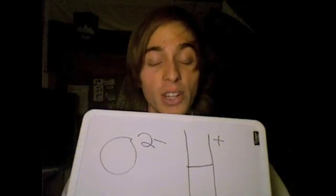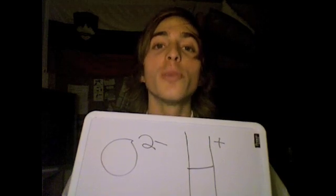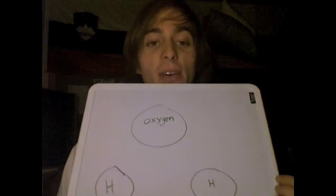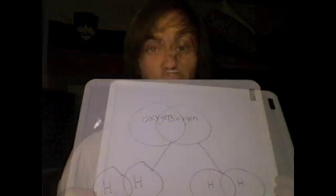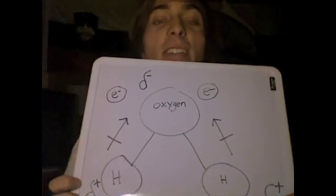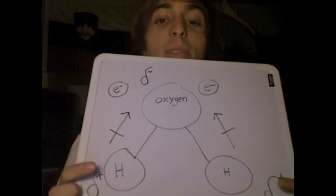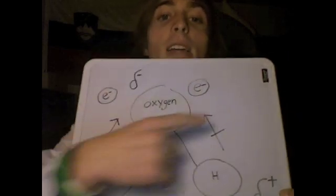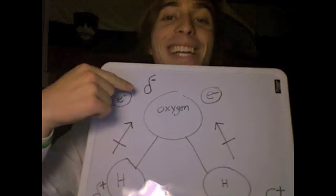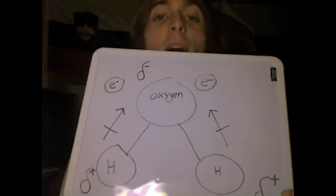Here we have the components of H2O. You might recognize them. Over here we have O2- and H+. Here we have an oxygen atom and two hydrogen atoms. Here they have bonded together. As you can see, oxygen has a higher affinity for electrons, and thus grabs the electrons of the hydrogen. The dipole is negative on the oxygen side, and down there it's positive.